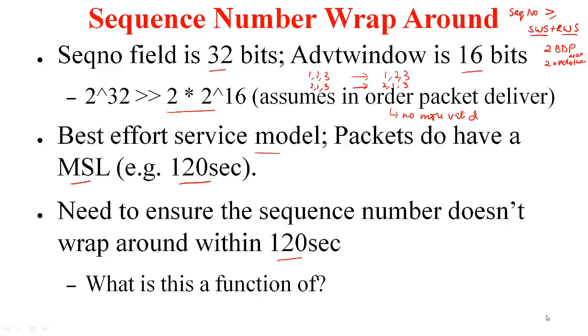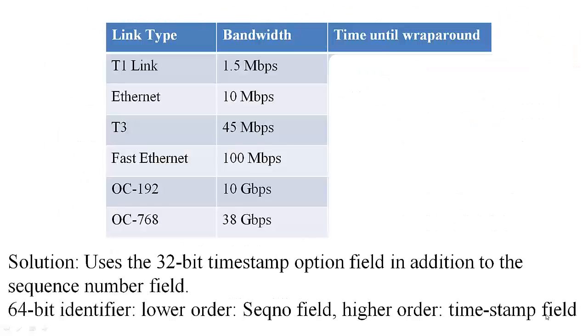Now what is this a function of? How fast are these sequence numbers incremented? How fast is the data being transmitted? This is a function of the link bandwidth, the available bandwidth. Let's just assume that there is no cross traffic and you are able to achieve this bandwidth. So here are the different link types and the bandwidth that you can achieve on this particular link type.